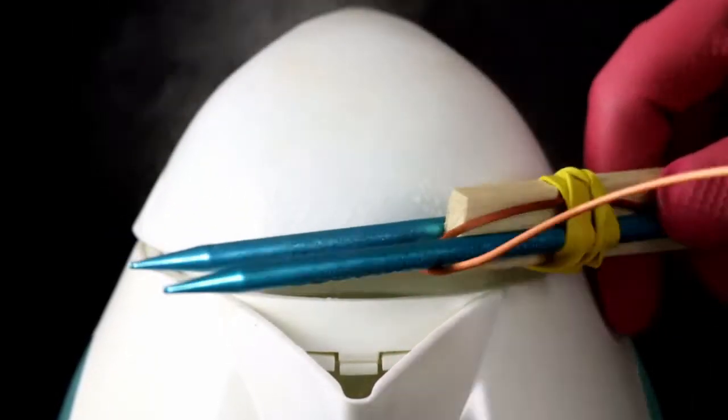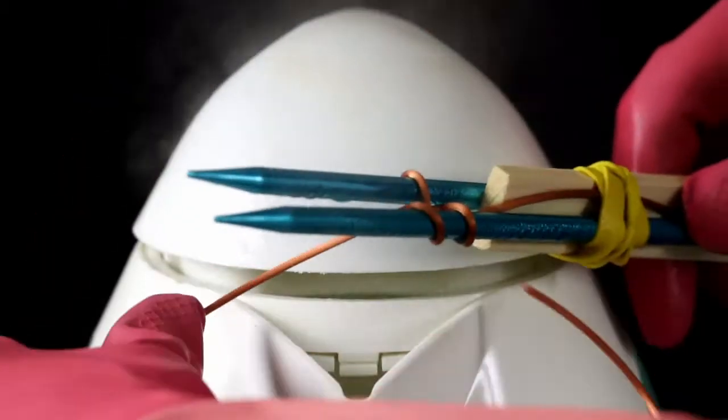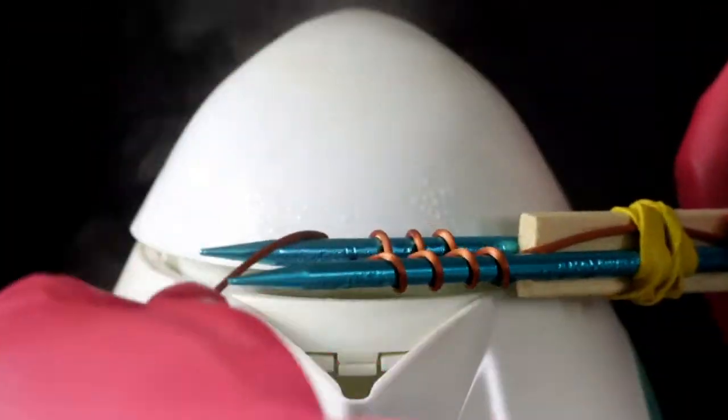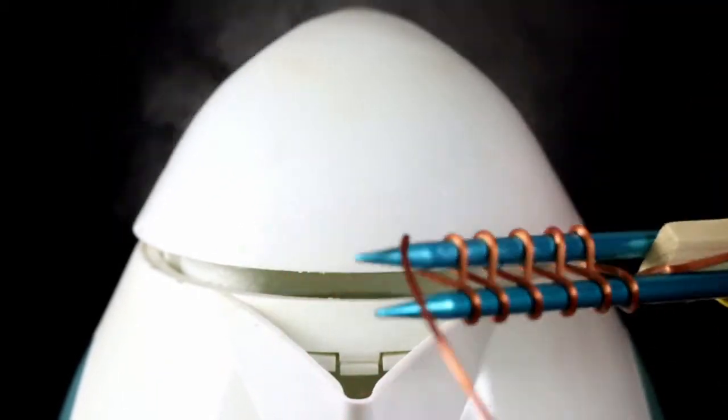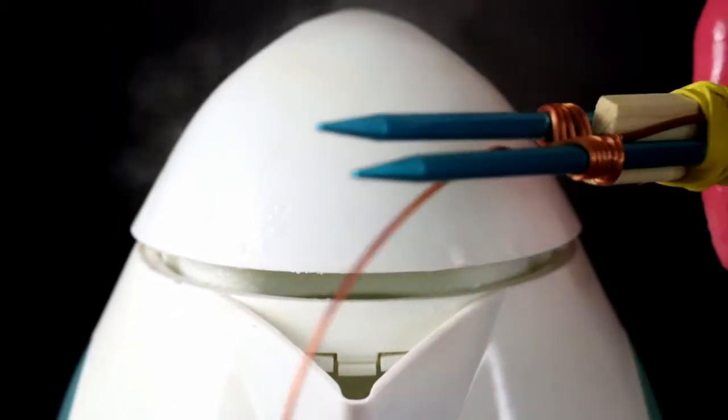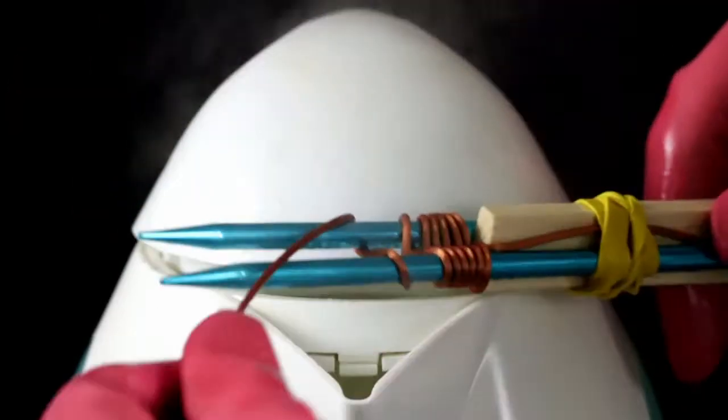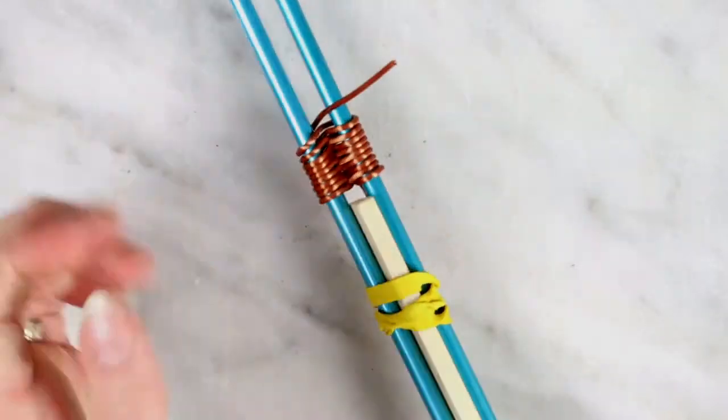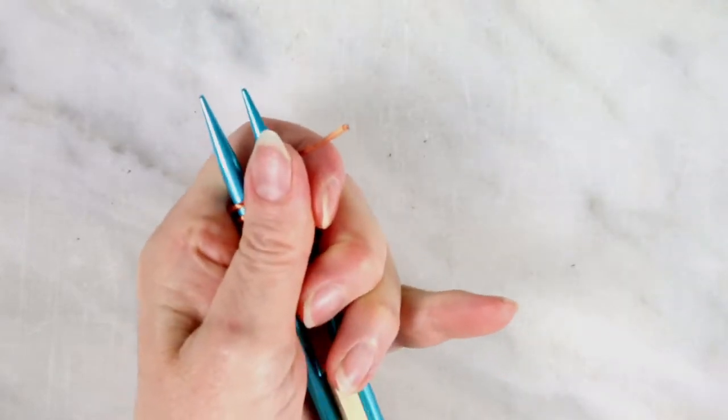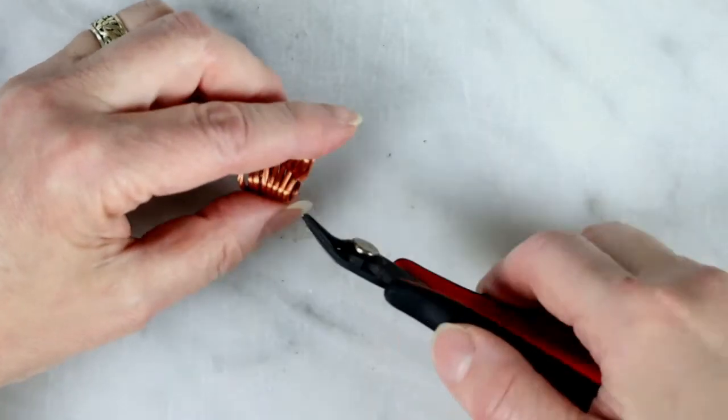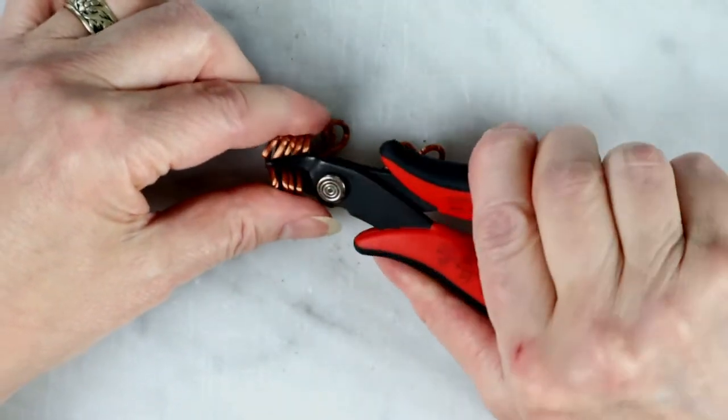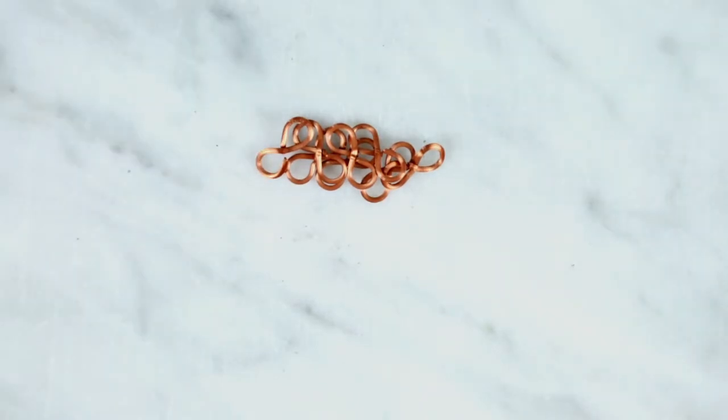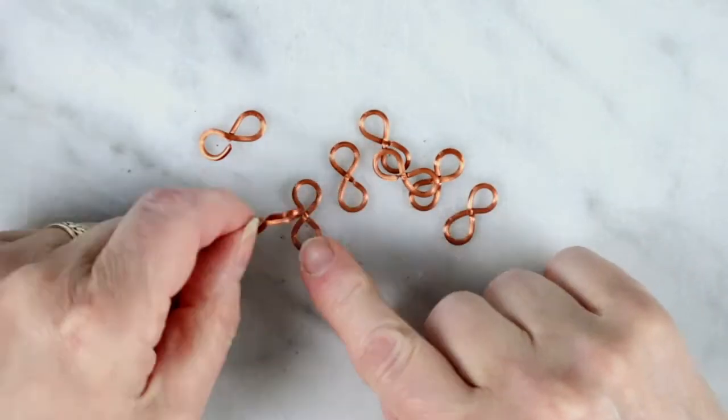Remember the S-hook we used to close the split ring chain? Well, you can also mass produce those. Just tape a spacer between your two knitting needles. And you can get a bit creative with your winding. Cut them. And you can use them as closures or make different style of chains from them.